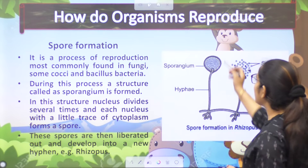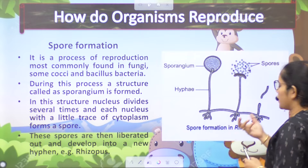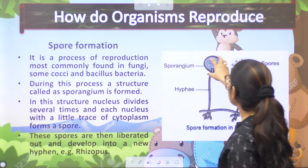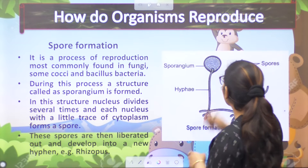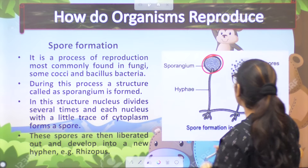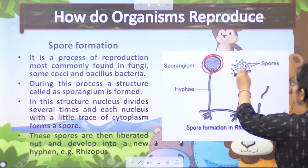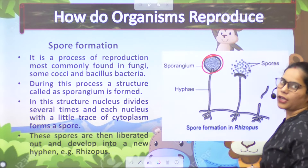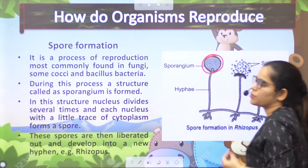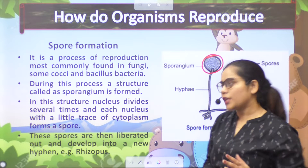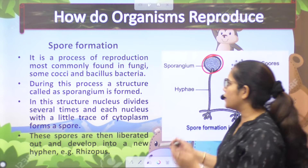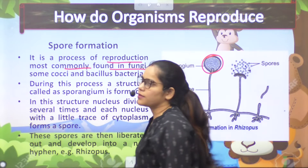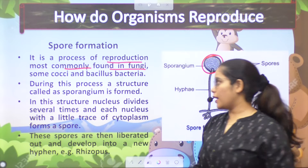As this plant grows up, the rhizopus grows up. They make new and new spores. So this is what happens. It is a process of reproduction most commonly found in fungi.